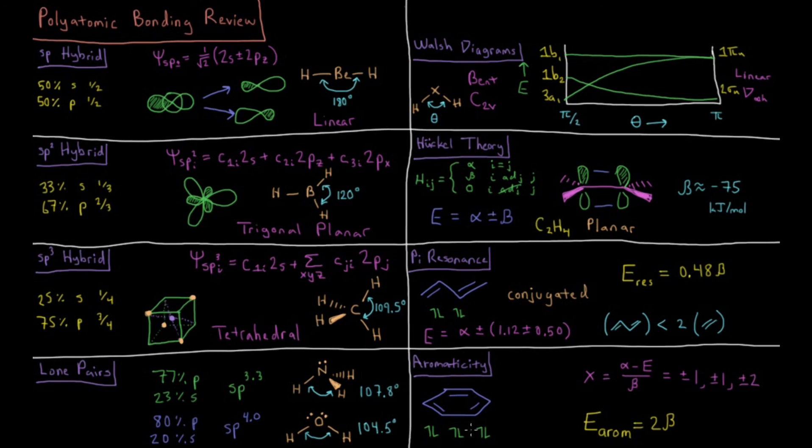Similarly, we can apply Huckel theory to aromatic systems, circular benzene with 6 pi electrons. If we define the quantity x, which equals alpha minus E over beta, we get that x, the orbital energies relative to alpha in units of beta, are plus or minus 1, plus or minus 1, each being doubly degenerate, and plus or minus 2.